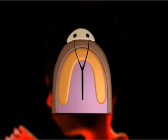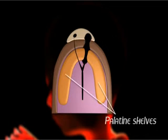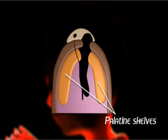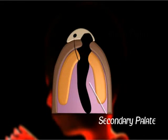Clefts of the face and the palate have different causes. Those of the lip and anterior maxillary result from defective development of the embryonic primary palate. Often when such clefts occur, the distortion of the facial development prevents the palatine shelves from making contact when they swing into the horizontal position. Thus, clefts of the primary palate are often associated and accompanied by clefts of the secondary palate, both hard and soft.